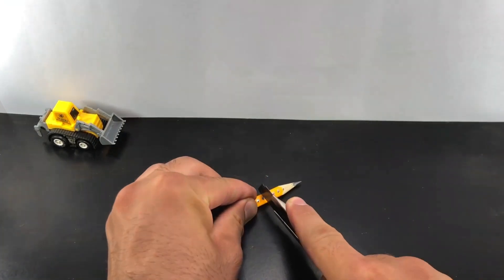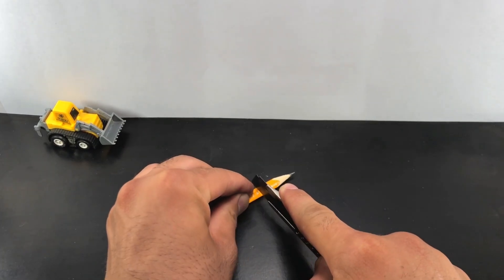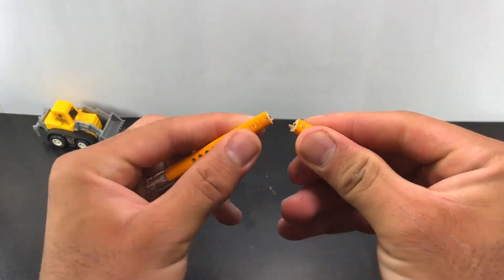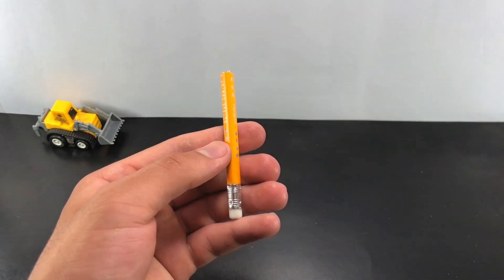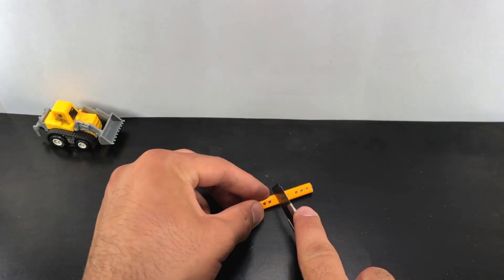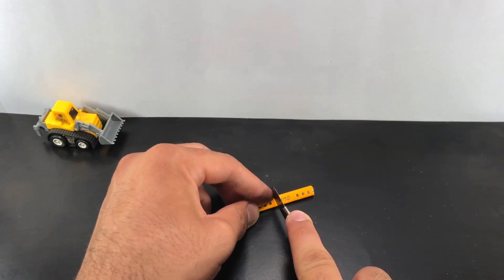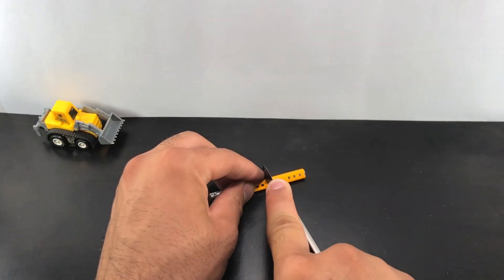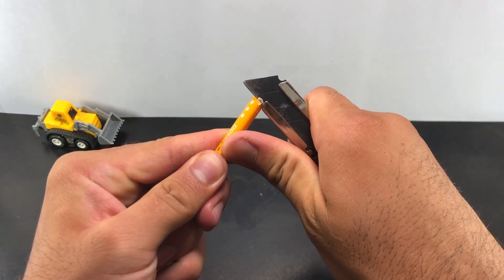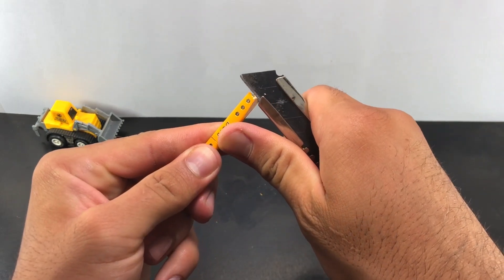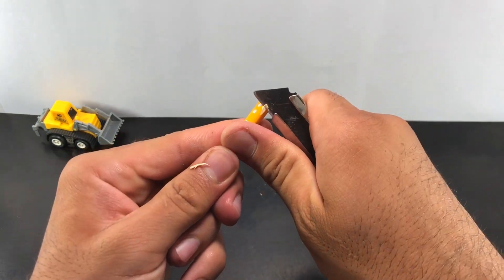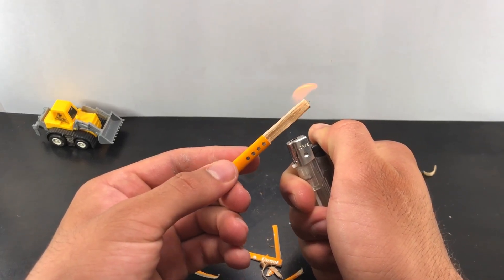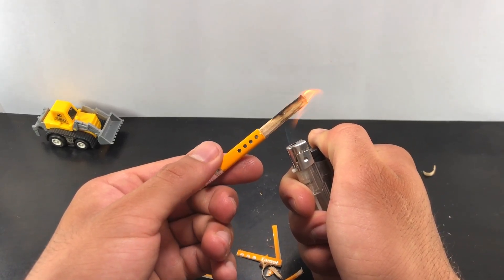Cut the pencil. Remove the pencil cover to the desired size. Use fire to easily remove the pencil cover.